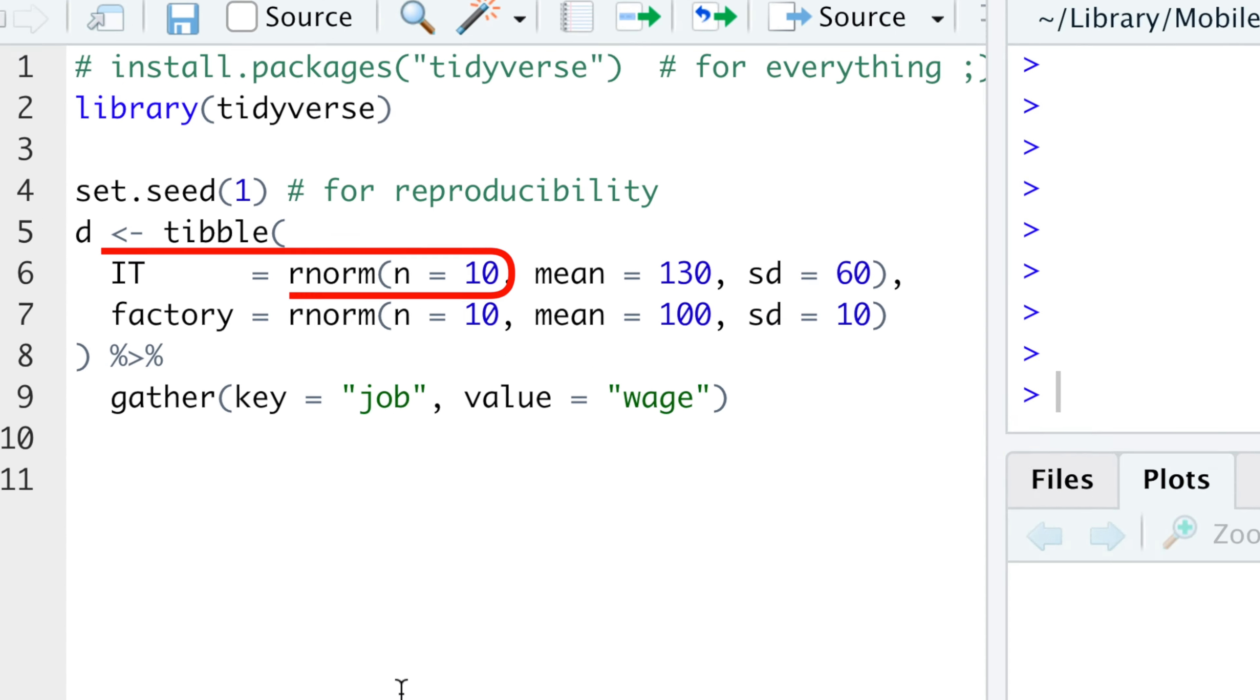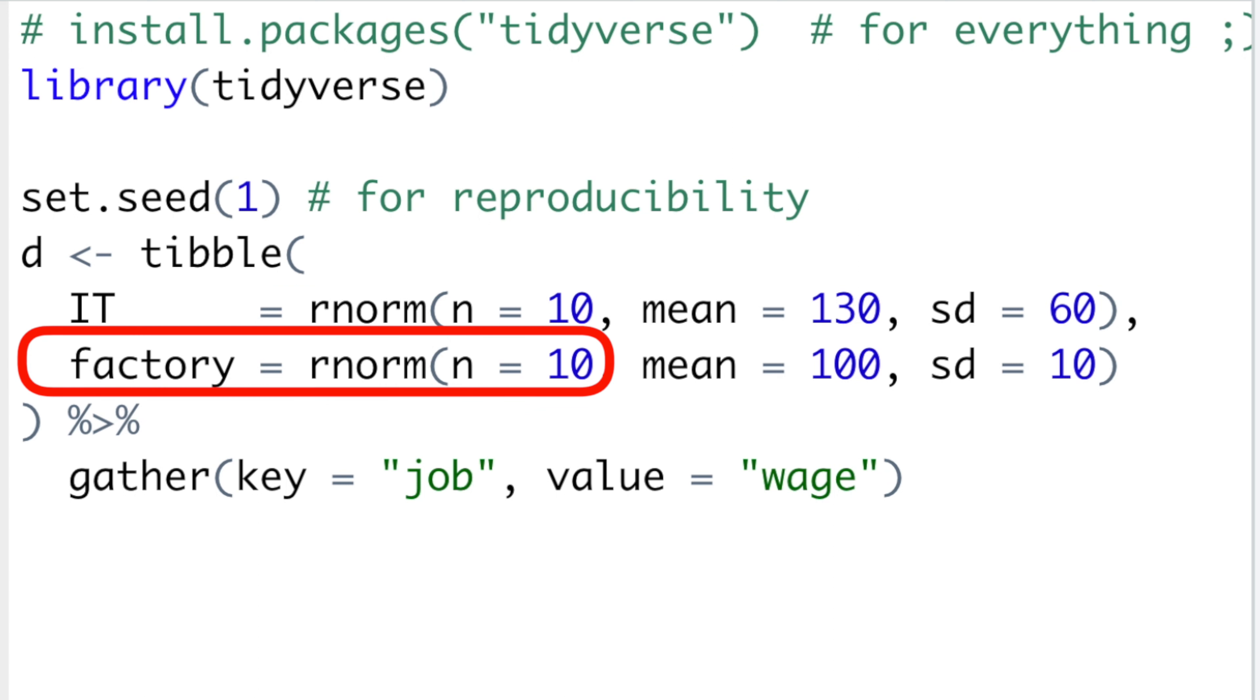We'll compare 10 random IT workers with 10 random factory workers. First of all, we'll see that on average IT crowd earns more than folks in the factory.